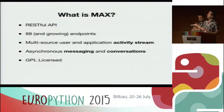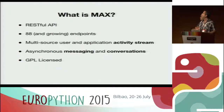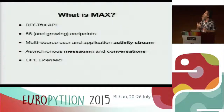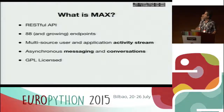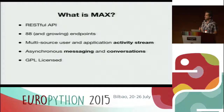Basically, what is Max? You've already seen the UI, but essentially it's a RESTful API with almost 100 endpoints, and it has two main features. First, it's a multi-source user and application activity stream — it can receive activity from users but also from applications, and we can impersonate applications or post on behalf of users. Second, we have asynchronous messaging and conversations. It's GPL licensed.